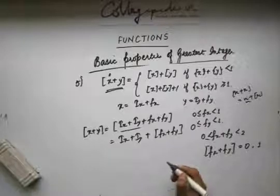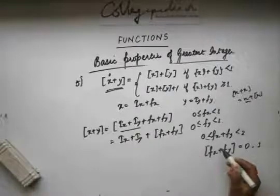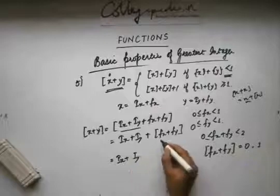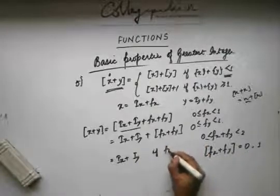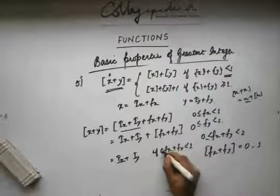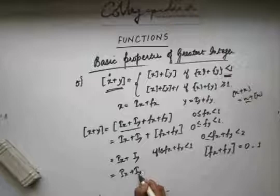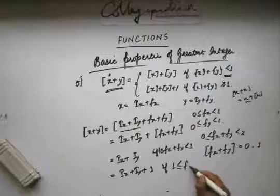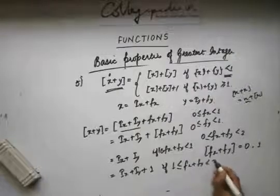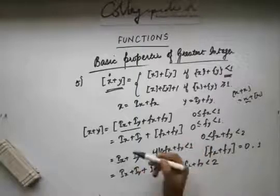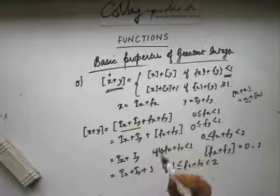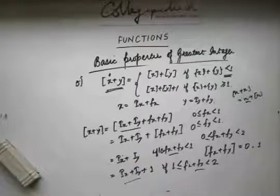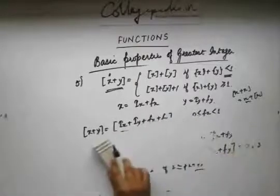If fx plus fy is less than 1, then ⌊x+y⌋ becomes ix plus iy, because ⌊fx+fy⌋ is 0. If fx plus fy is greater than or equal to 1, then ⌊x+y⌋ equals ix plus iy plus 1. Now replacing ix with ⌊x⌋ and iy with ⌊y⌋ in both cases, you can see this matches the original statement exactly. So we have proved the fifth important property of the greatest integer function.